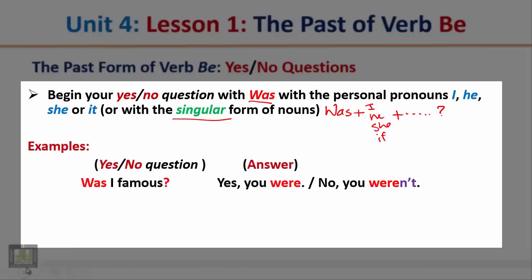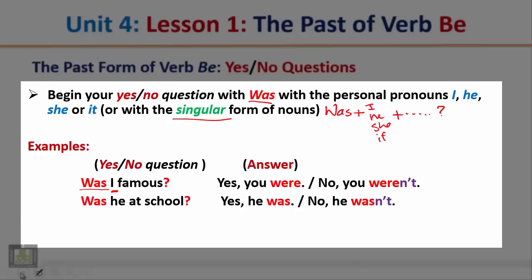Examples: 'Was I famous?' Notice that we start the question with the verb 'was,' then put the subject. 'Was she busy?' The answer: yes, you were, or no, you weren't. 'Was he at school?' Again, we start the question with the verb, then put the subject. The answer: yes, he was, or no, he wasn't.